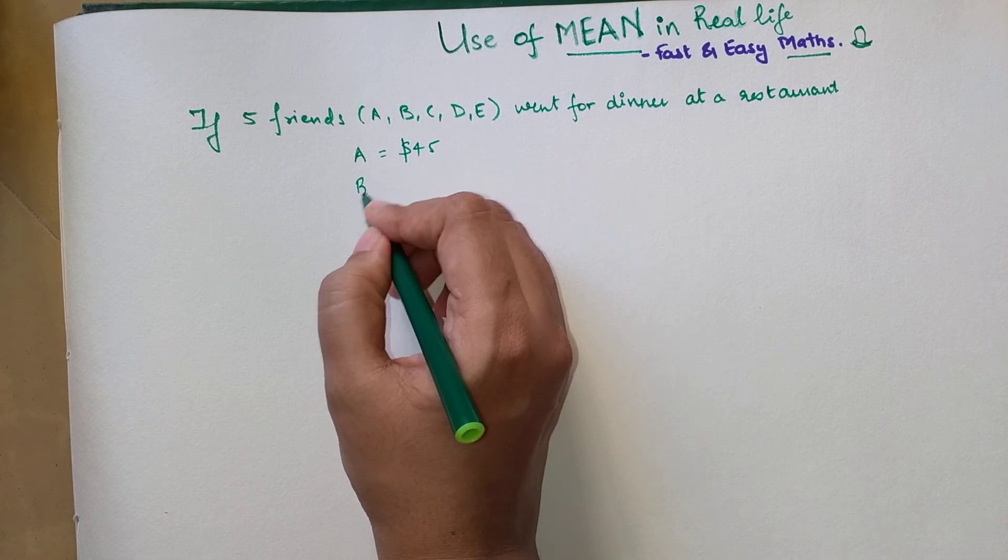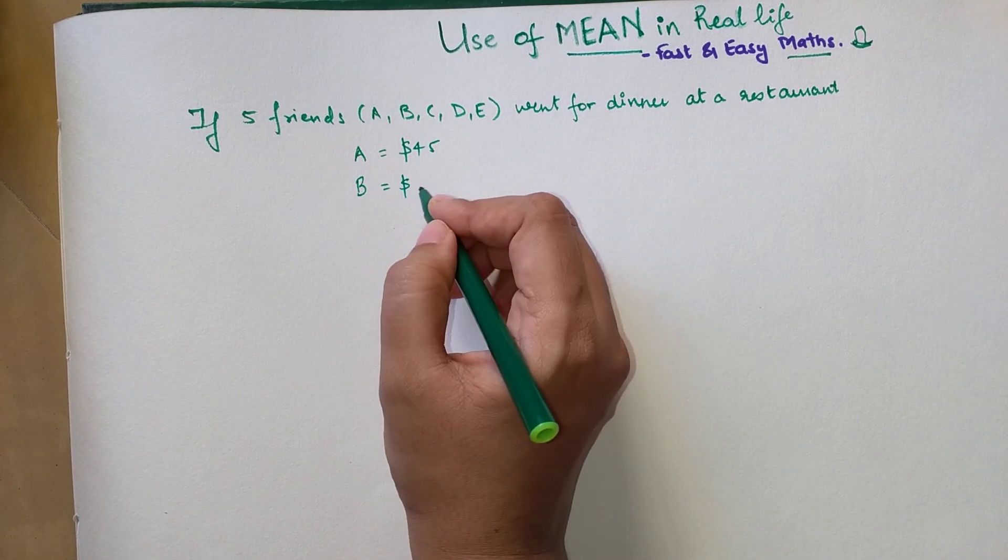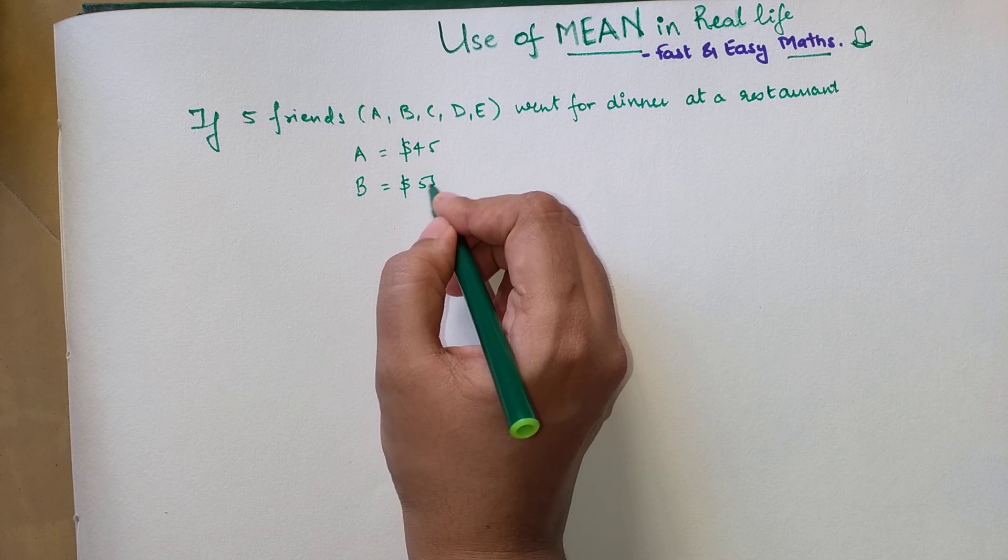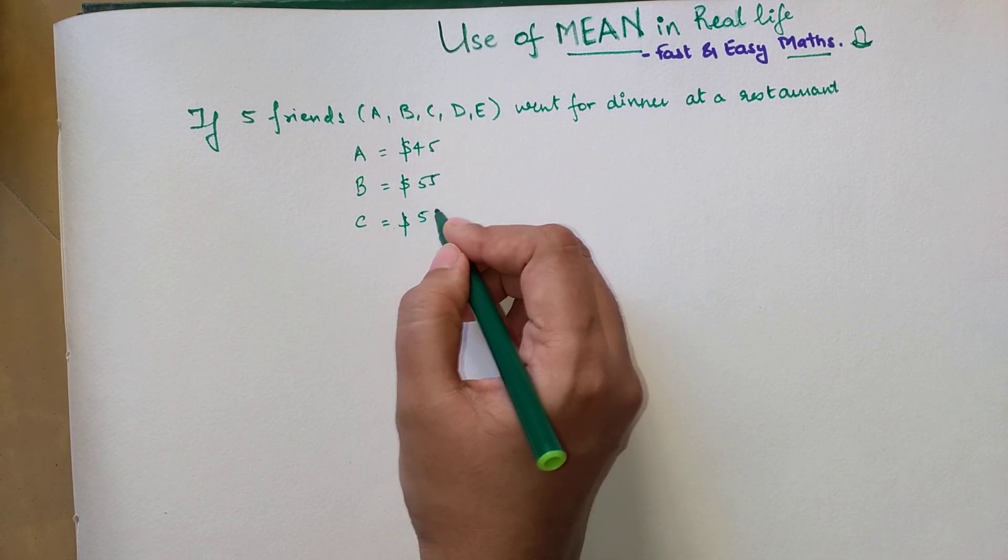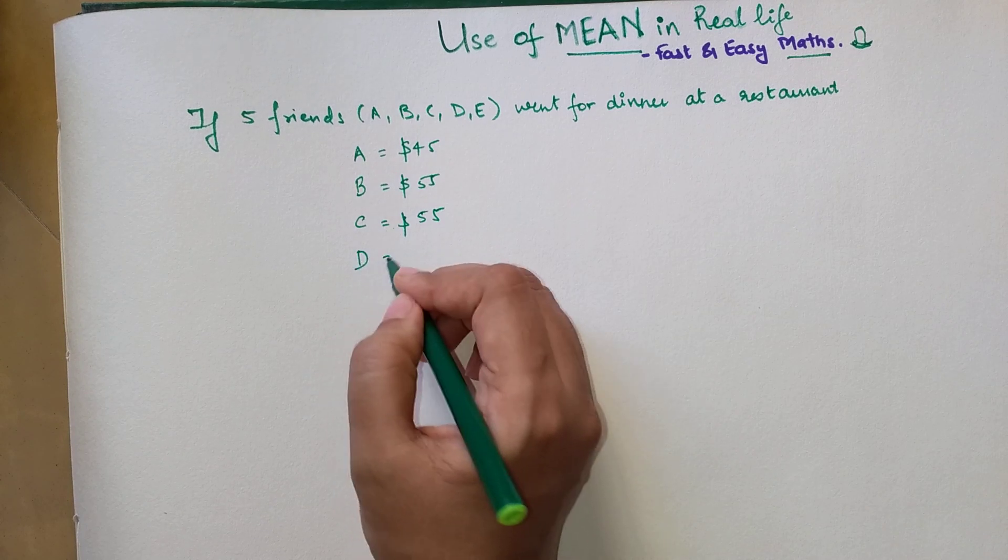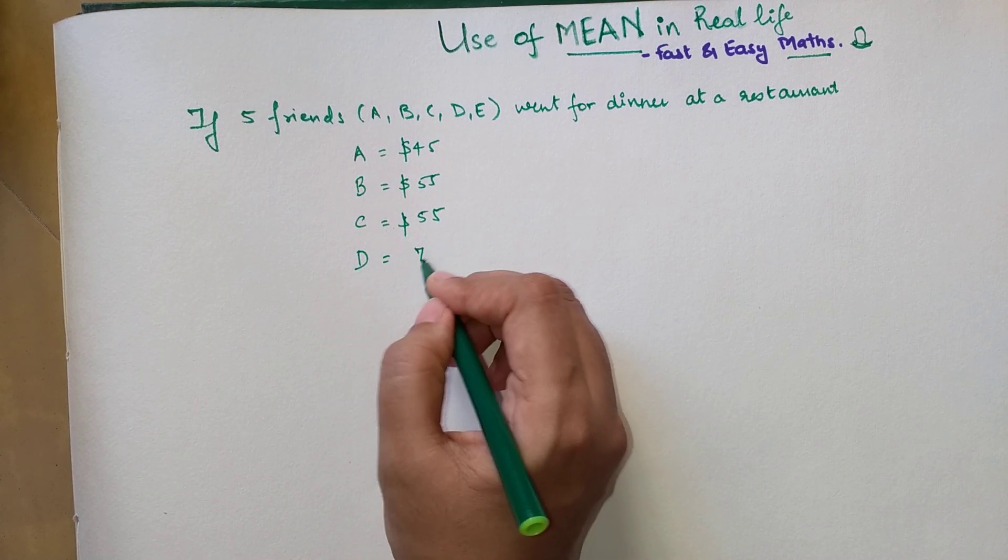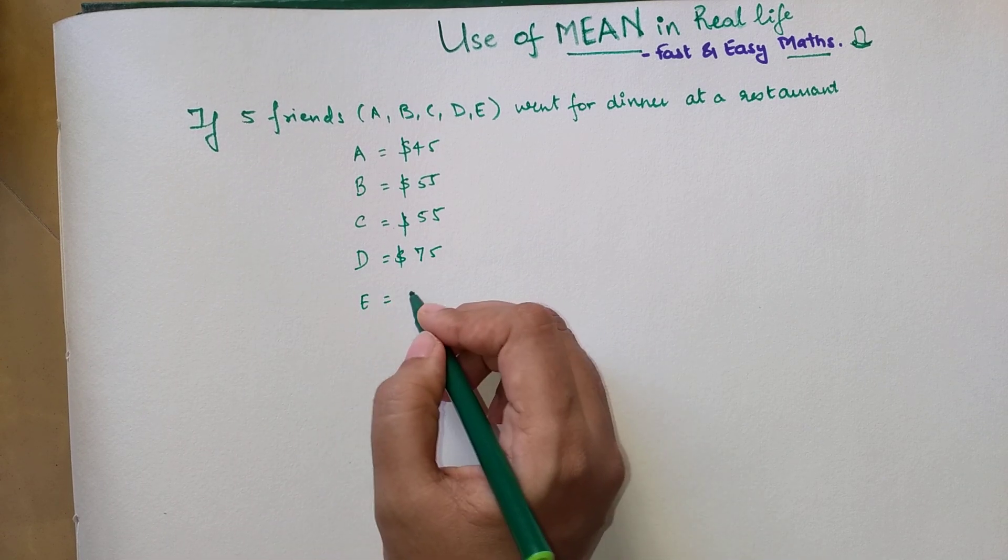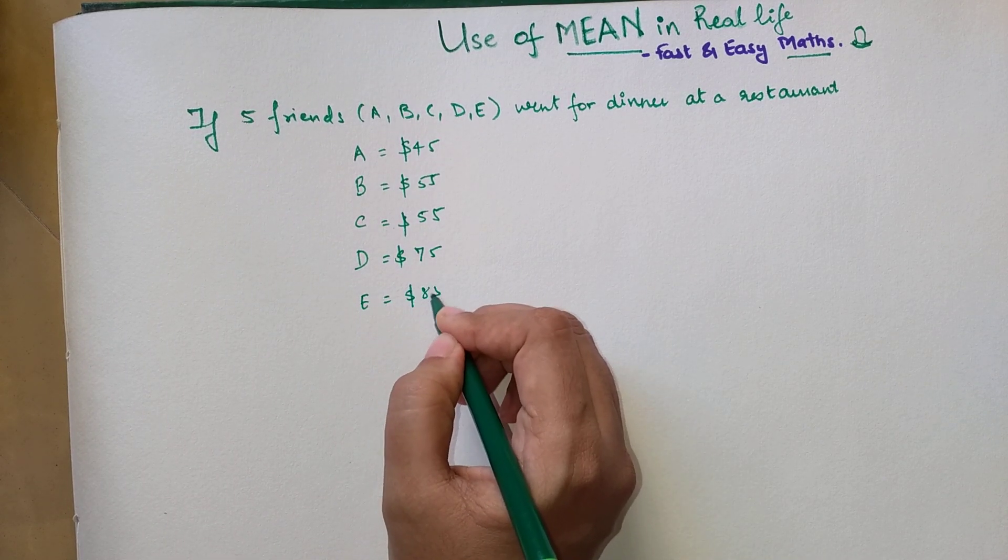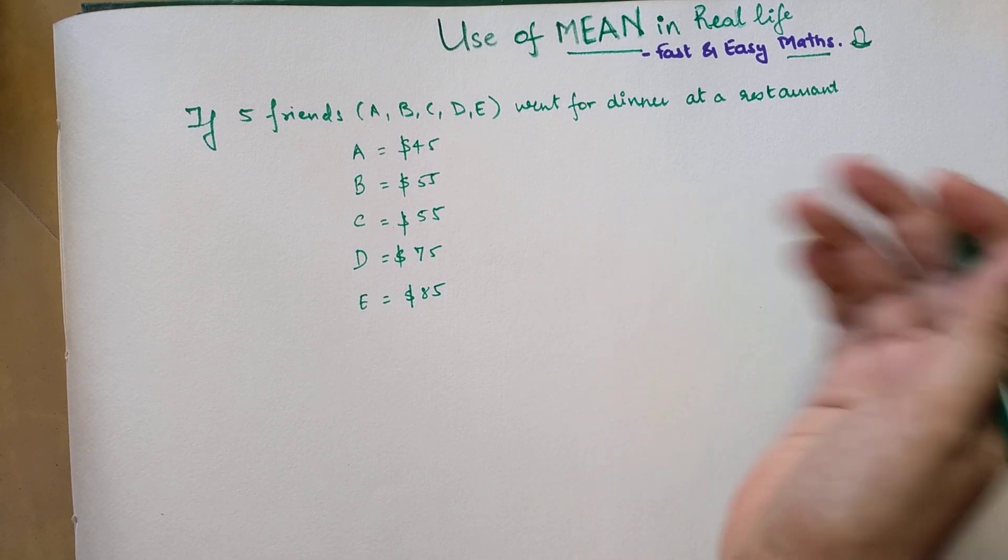A ordered a dish which cost $45, B ordered a dish which cost $55, C ordered a dish which cost $55, D ordered a dish which was $75, and E ordered a dish which was $85.